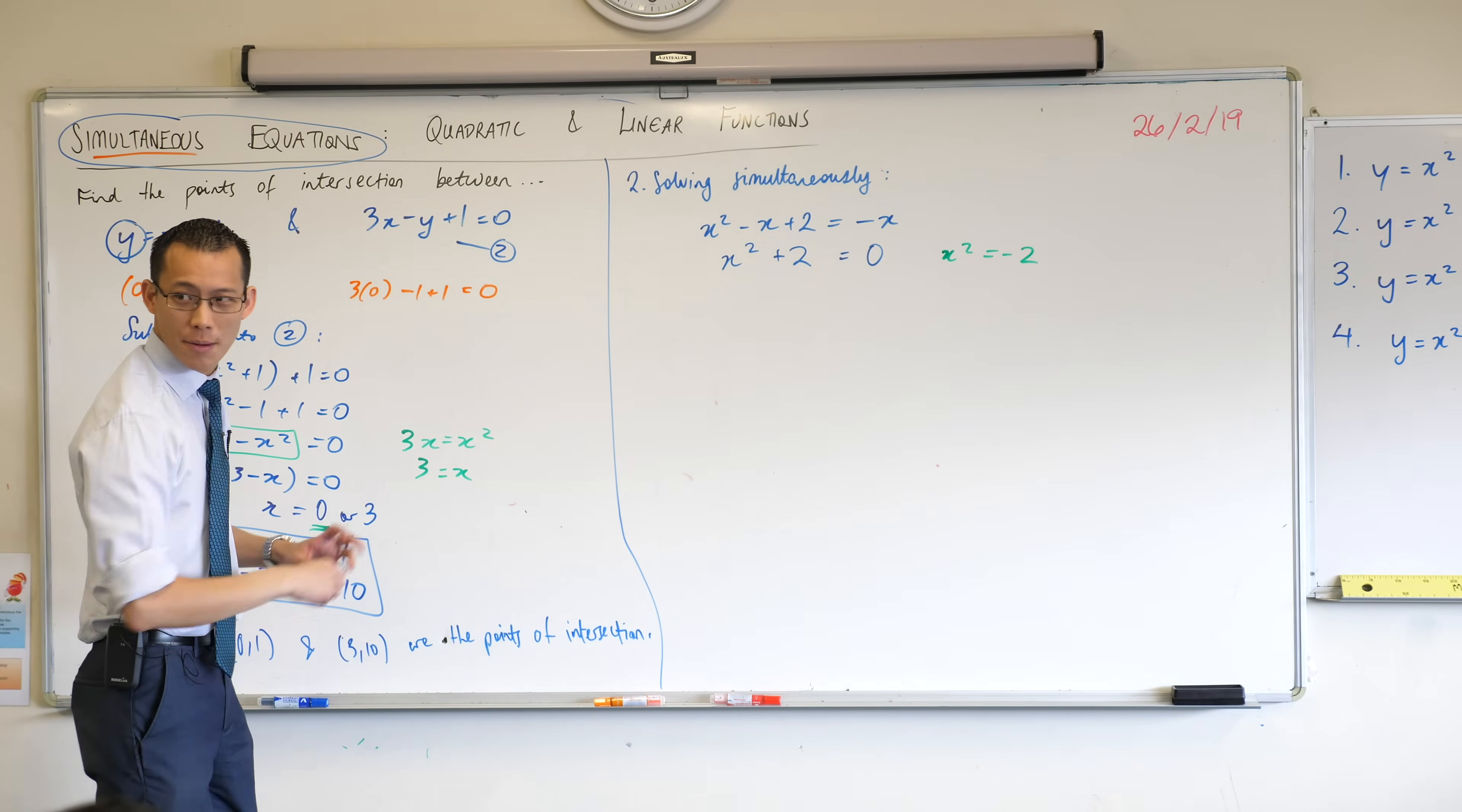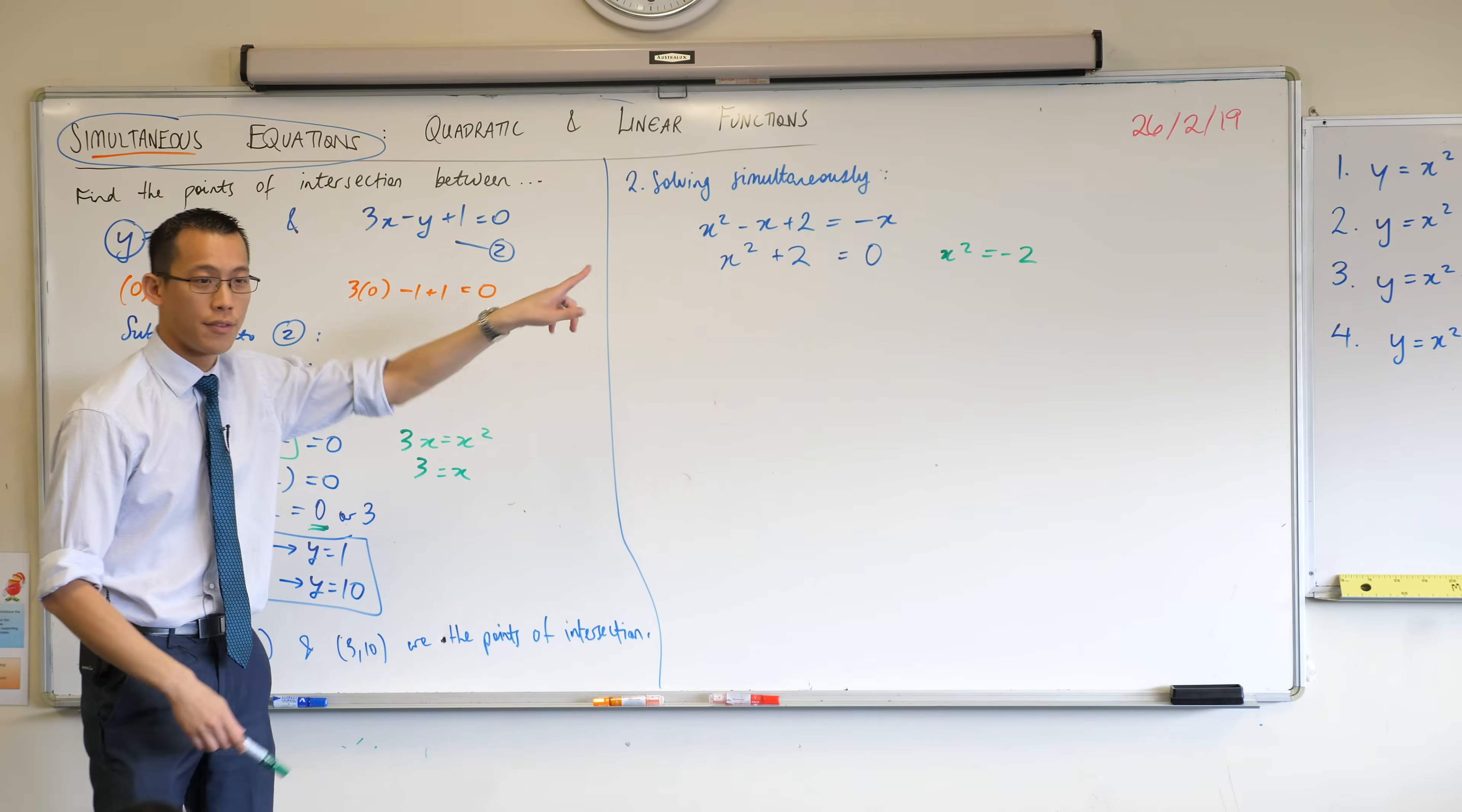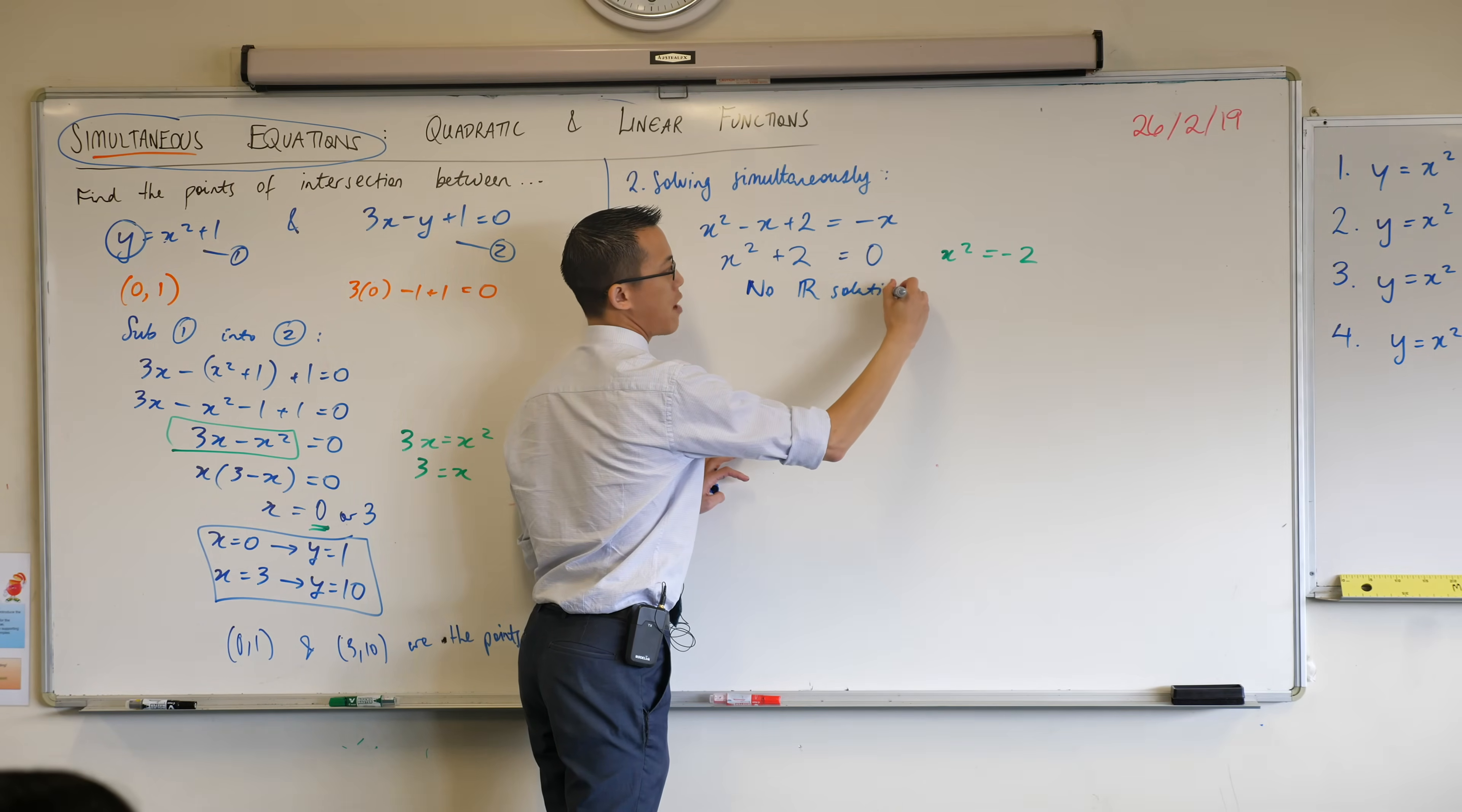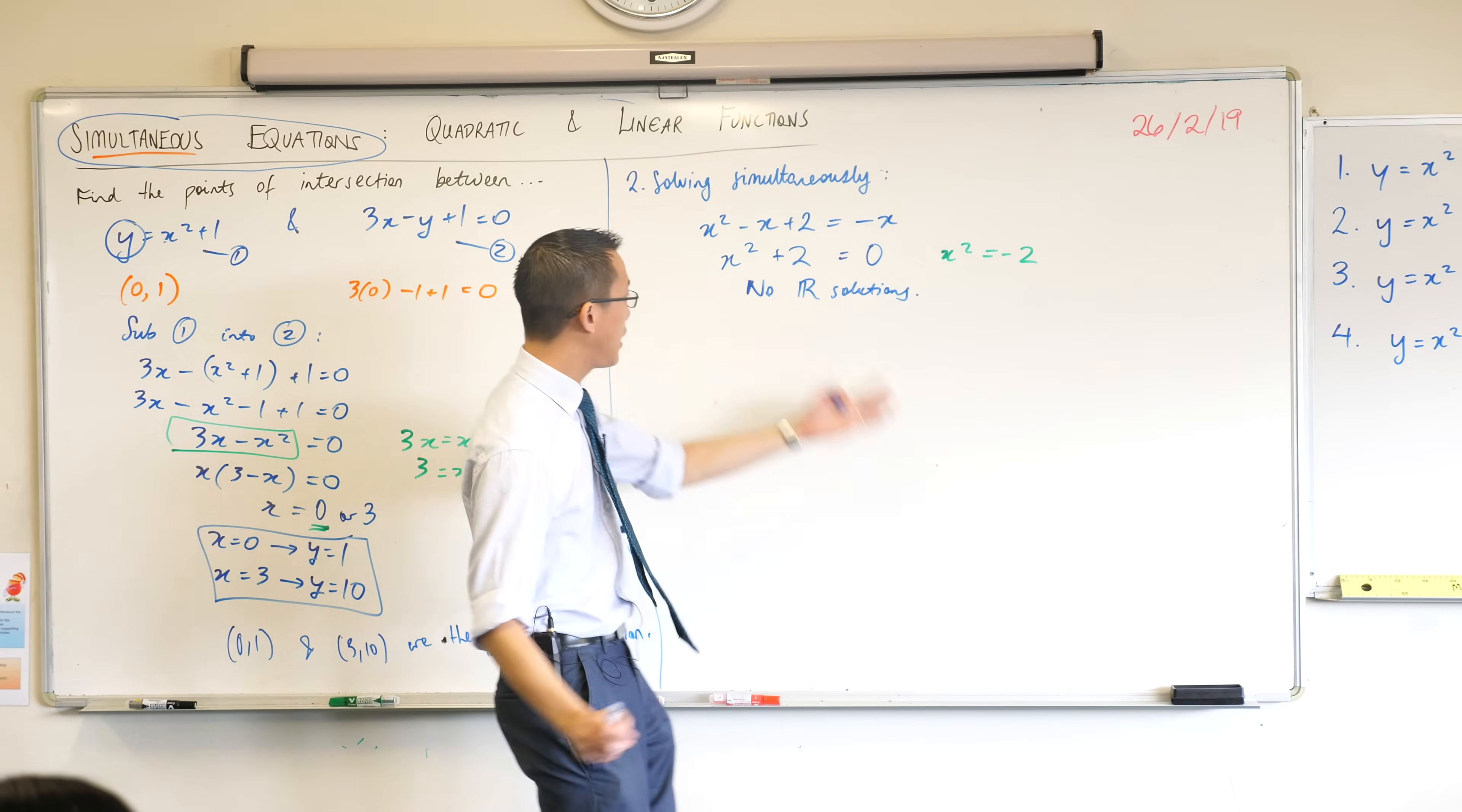Because now we're saying, hold on, there's some number and you square it and apparently you get negative 2. Now, when you take the square to both sides, you're like, okay, this is not happening. What do you say of this? You have a way to conclude this. You would say, no real solutions. Okay, there are no answers to this.